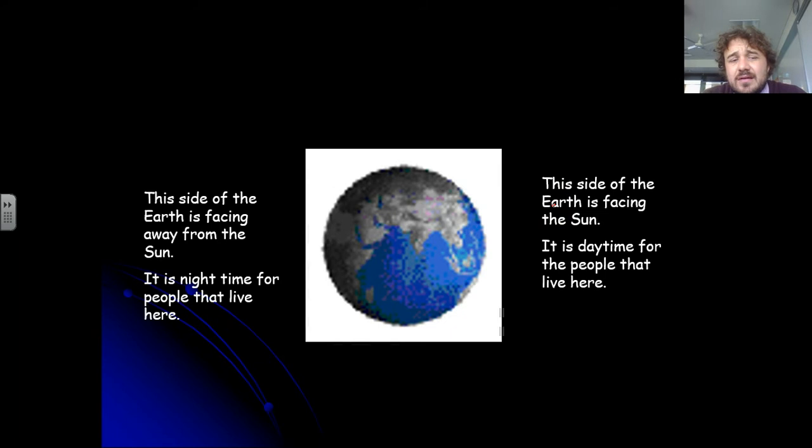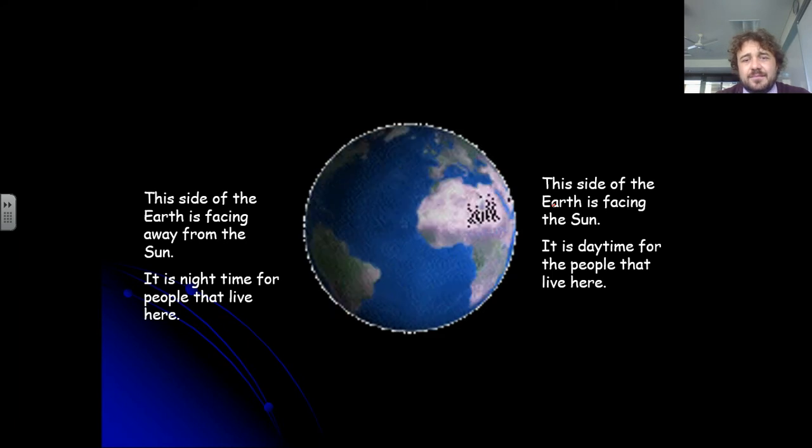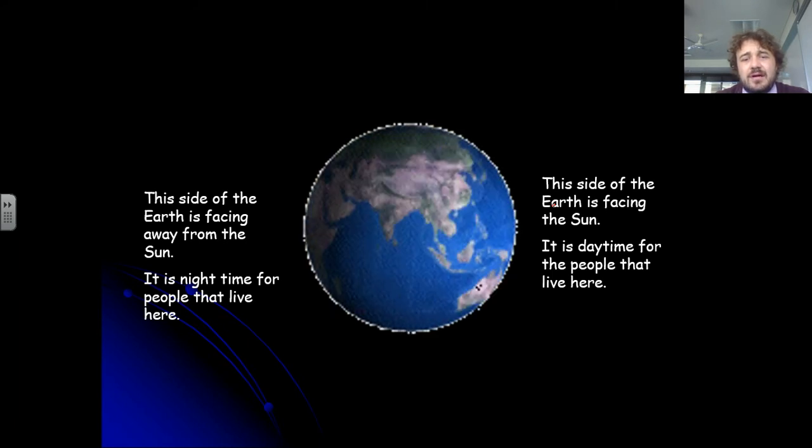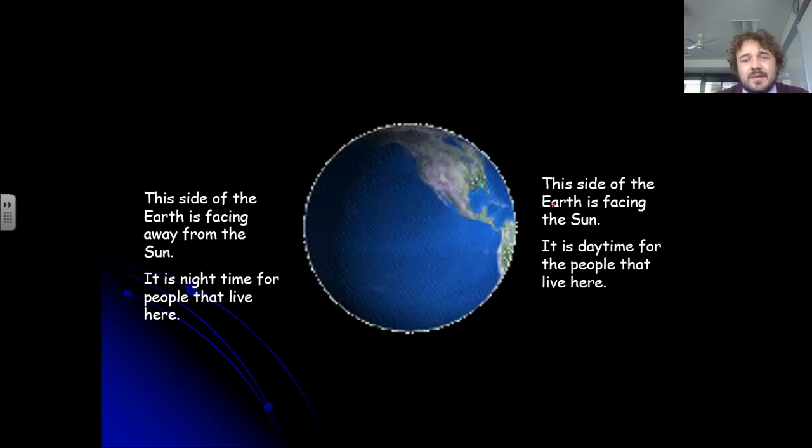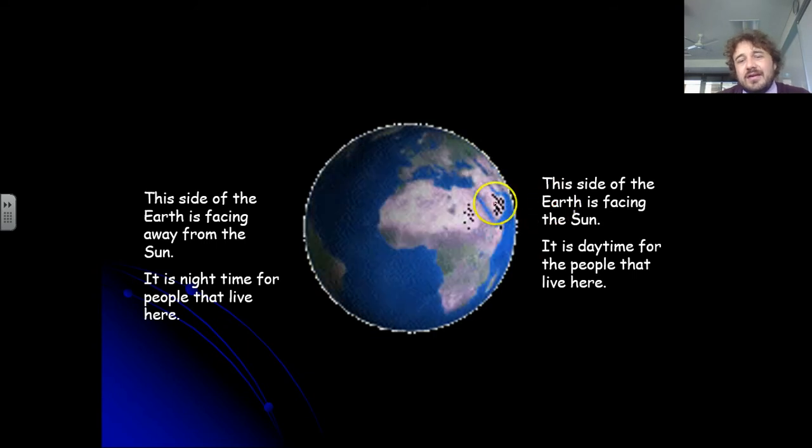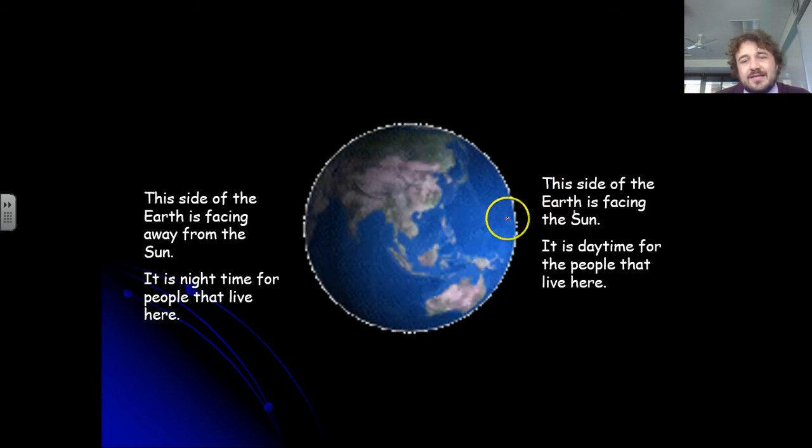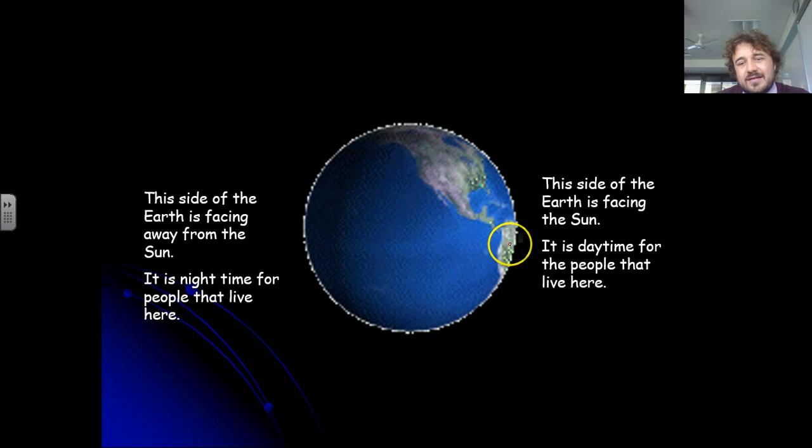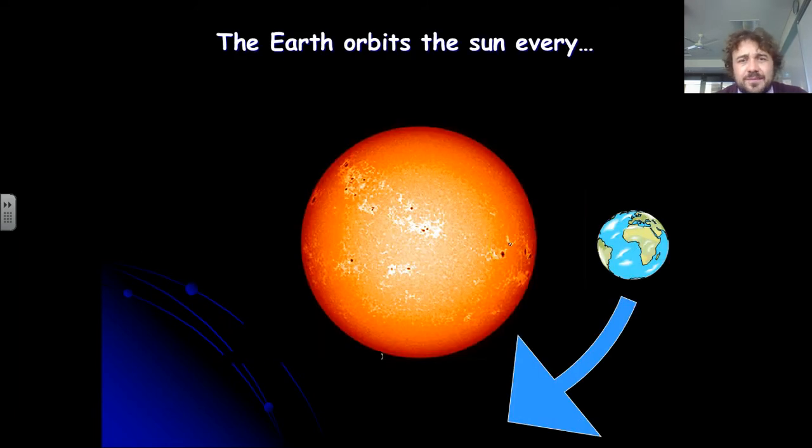So the side of Earth facing away from the sun is night, and people who live on this side experience daytime. And here we can see that they're making this side the nighttime, because you can see the lights go on, which is pretty cool.